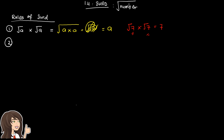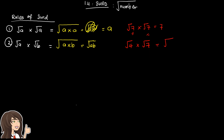Rule number 2: √a multiplied by √b. When you have the same root, you can just multiply the numbers inside, giving you √(ab). For example, √4 × √7 = √(4×7) = √28.